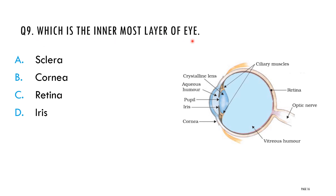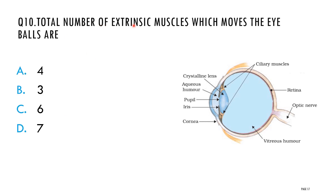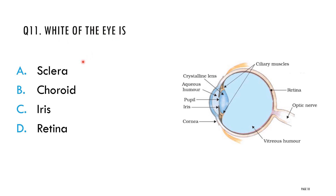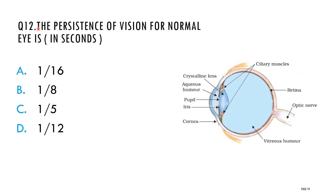Question nine: which is the innermost layer of the eye? Options: sclera, cornea, retina, iris. The correct answer is retina. Question ten: what is the total number of extrinsic muscles that move the eyeballs? Options: four, three, six, seven. The correct answer is six. Question eleven: the white part of the eye is — options: sclera, choroid, iris, retina. The correct answer is sclera. Question twelve: the persistence of vision for a normal eye in seconds is? Options: 1/16, 1/8, 1/5, 1/12. The correct answer is 1/16th of a second.